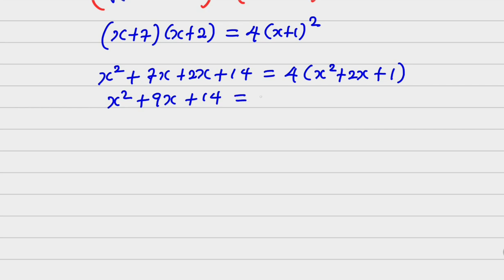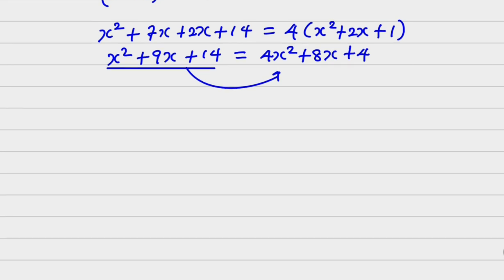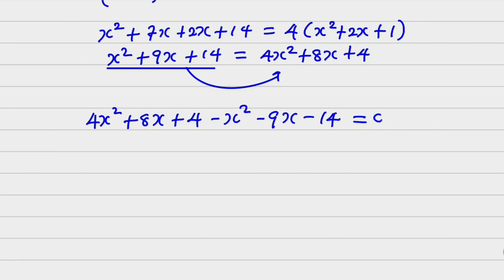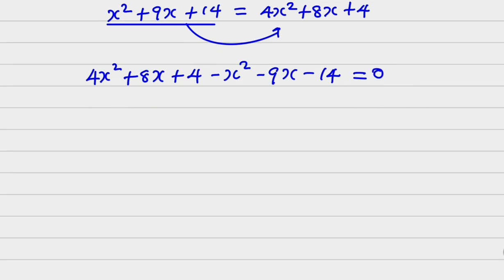Taking everything to one side: 4x squared minus x squared plus 8x minus 9x plus 4 minus 14 equals zero. This gives 3x squared minus x minus 10 equals zero.